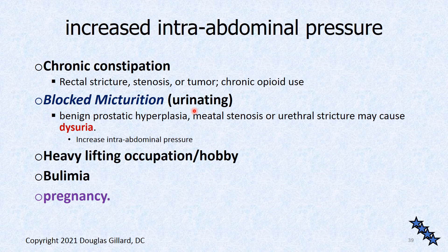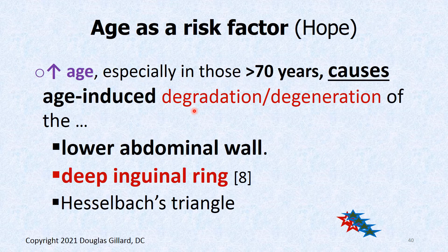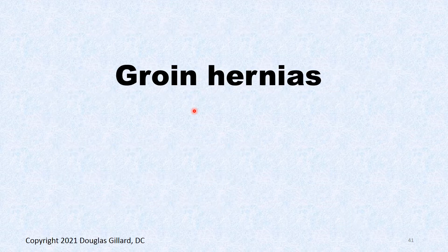Other risk factors include chronic constipation — you're pushing and straining all the time. Heavy lifting jobs or hobbies like weightlifting or construction work. Patients with BPH — benign prostatic hyperplasia — who have to push hard to urinate. Bulimia, people throwing up on purpose, or alcoholics throwing up — that increases pressure. Pregnancy increases pressure. Age is a risk factor; as you get older, you dry out, ligaments get weak, and especially the lower abdominal wall, the deep inguinal ring, and Hesselbach's Triangle all get weaker.